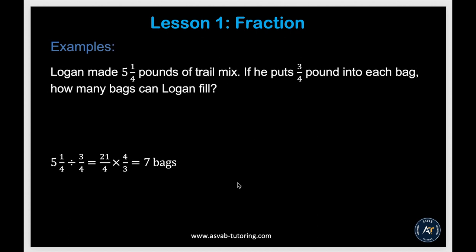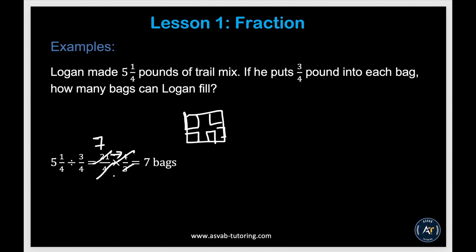Here's another example: Logan made 5 and 1 pound of trail mix. If he puts 3 quarter pound into each bag, how many bags can Logan fill? You need to divide the total by the portion per bag. Convert the mixed number to an improper fraction, apply Keep-Change-Flip, then multiply top to top and bottom to bottom — you can cross terms out: 21 divided gives 7, and 3 divided by 3 is 1, so that gives you 7 bags.